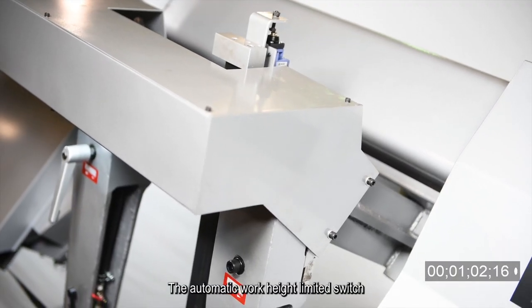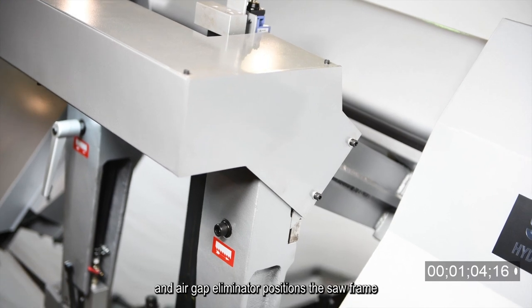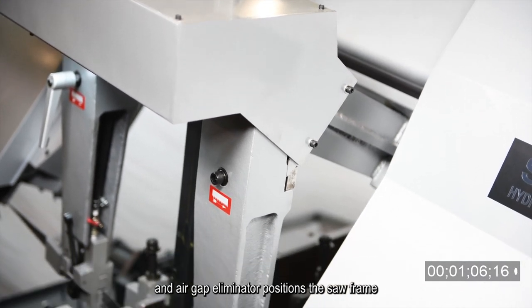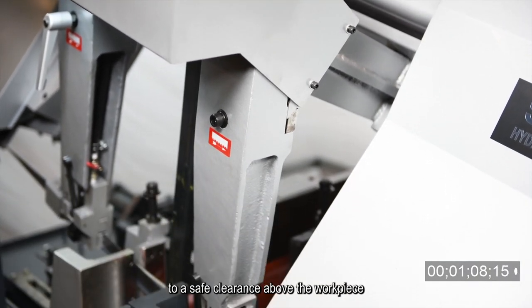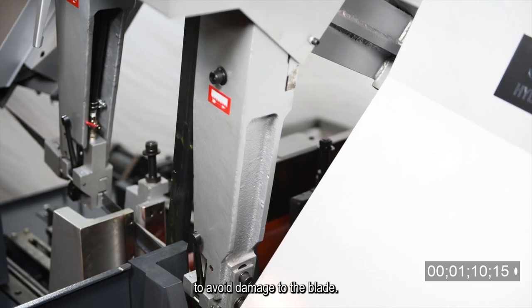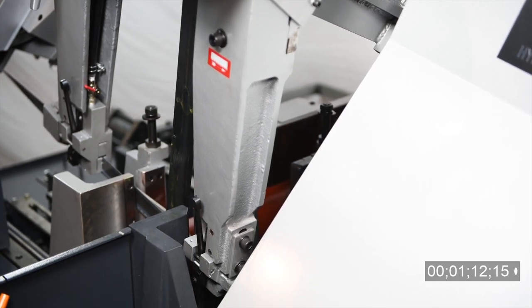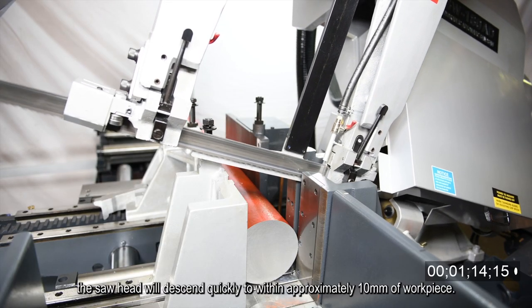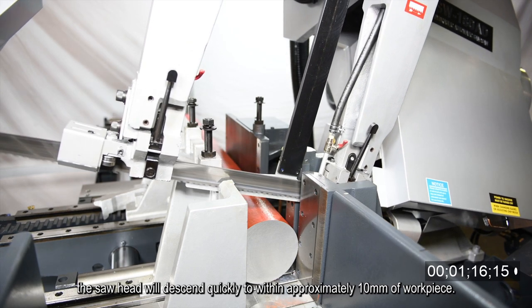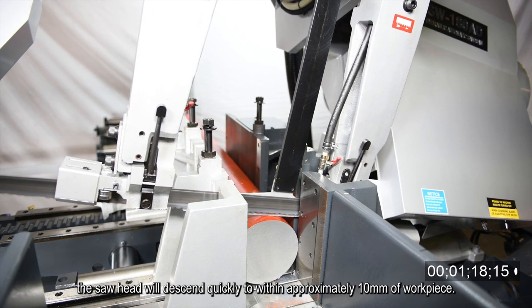The automatic work height limited switch and air gap eliminator positions the saw frame to a safe clearance above the workpiece to avoid damage to the blade. After feeding, the saw head will descend quickly to within approximately 10 millimeters of the workpiece.